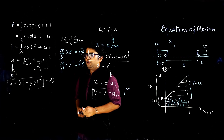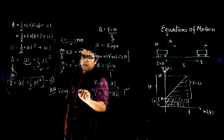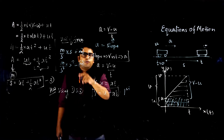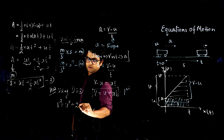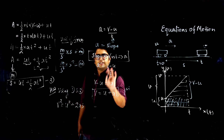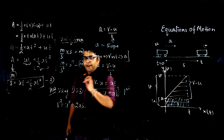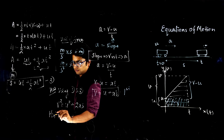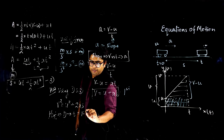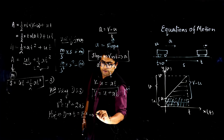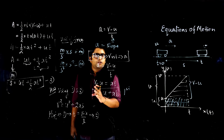This is homework for you: using equation 1 and equation 2, derive the third equation of motion, which is v² = u² + 2as. You will have to eliminate t. Hint: from the first equation, find the value of t as (v − u) / a, then substitute this into the second equation and simplify to get the answer. Keep all three equations of motion in mind, and I will see you in the next class.